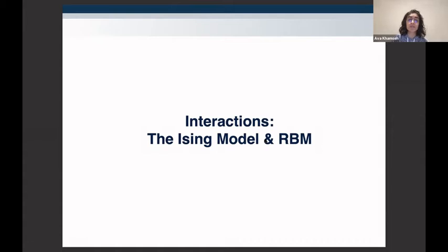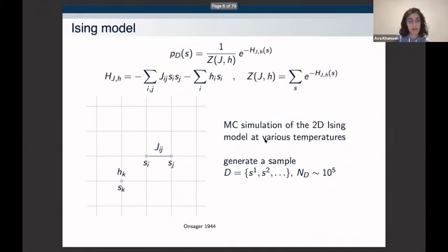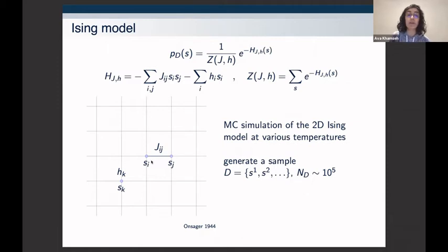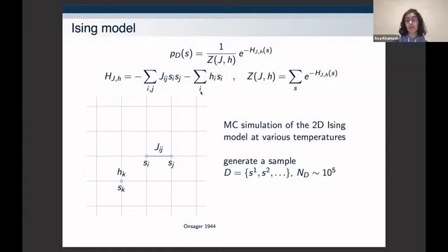Starting with the physicist's approach: in the Ising model, on the machine learning side I'll focus on Restricted Boltzmann Machines (RBMs). We generate data from the 1D or 2D Ising model, which comes with a Hamiltonian where we have magnetic spins on a 2D lattice, either pointing upwards or downwards — every data point is binary — with a coupling J_ij connecting the points. In the specific case of the Ising model these couplings are the same throughout the lattice with translational invariance, and the magnetic field h_i is set to zero.